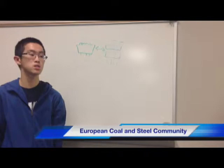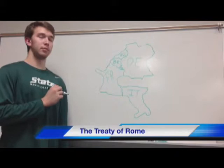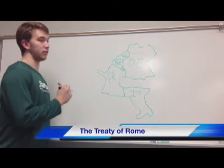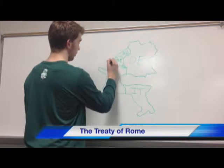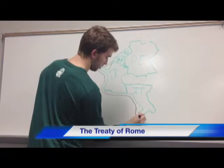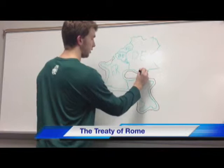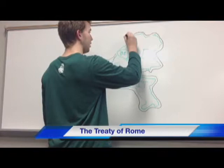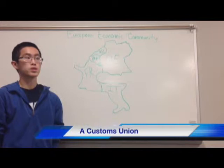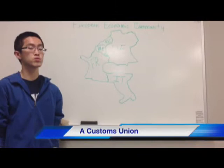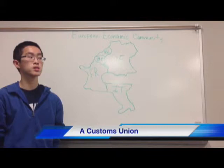The first formal treaty signed between the original six was the Treaty of Rome, which introduced a continuous process of integration in 1957. This created a free trade area named the European Economic Community among France, Italy, Germany, the Netherlands, Belgium, and Luxembourg. Further integration occurred in 1968, creating a customs union that removed trade barriers and established a common external tariff, limiting domestic market control of member nations.